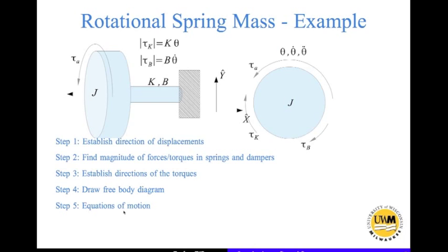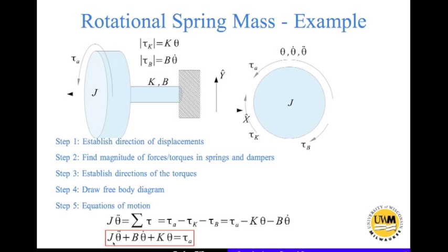Finally, we apply Euler's law of motion — the rotational equivalent of Newton's second law — which states J times theta-double-dot equals the sum of all torques. The applied torque Tau_A is positive (counterclockwise), while the spring torque Tau_K and damping torque Tau_B are both negative (clockwise). Substituting gives the final equation of motion. Again, check that the coefficients of theta-double-dot, theta-dot, and theta all have the same sign — if not, there is a mistake in the free body diagram.